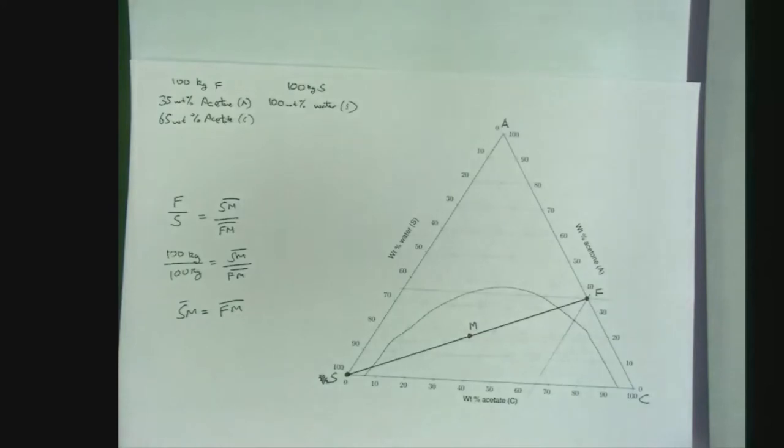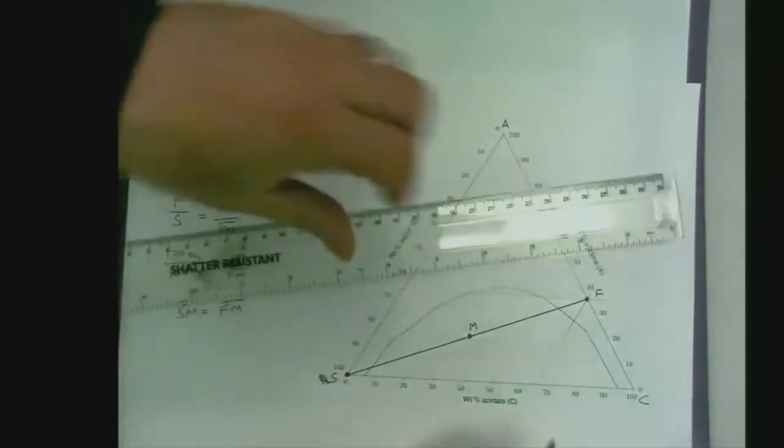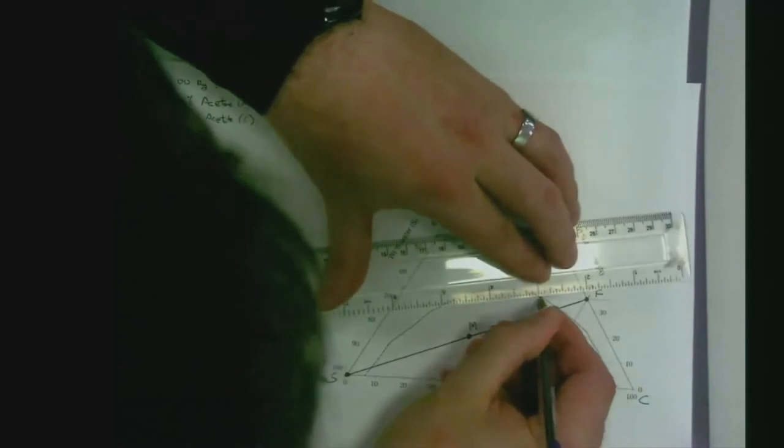What it actually asks us to do is find how this splits up into its two mixtures. Looking up, the tie lines are rather unclear, so let me just highlight them.